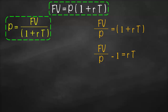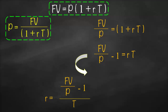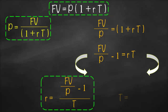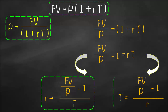So let's calculate our simple interest first. Our simple interest is equivalent to future value divided by P minus one, all of this divided by time. And this will be our third formula. What if we would like to calculate time? Future value divided by principal minus one, all of this divided by simple interest. And this will be our fourth formula.